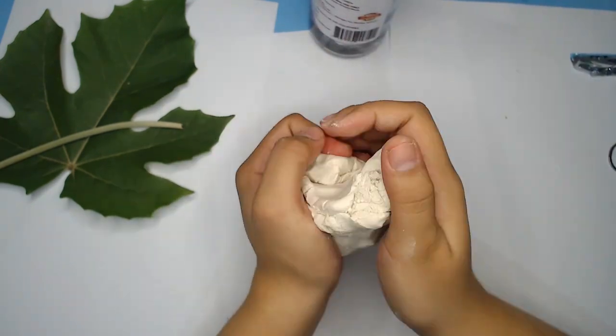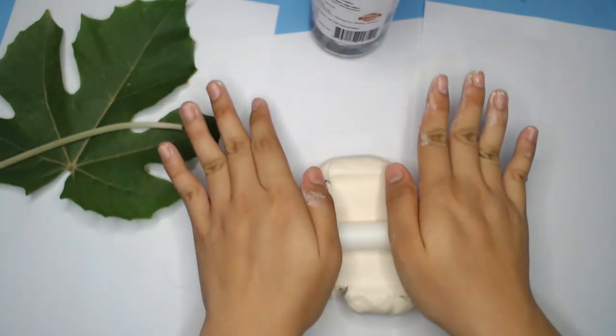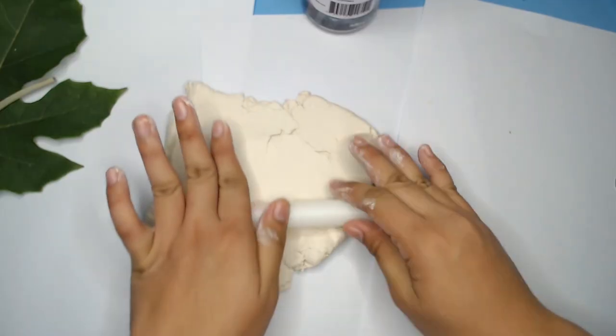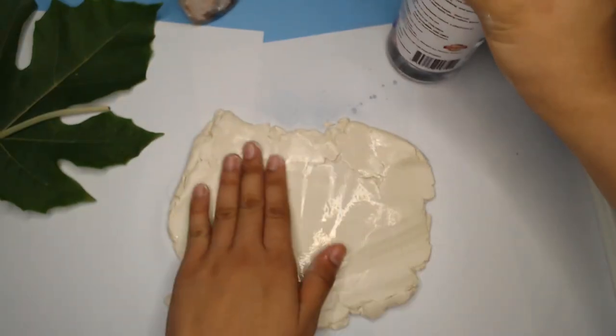The texture reminds me of earthen clay that is used in pottery. Use a rolling pin to flatten the clay on the surface. Add some water while rolling to avoid cracks.